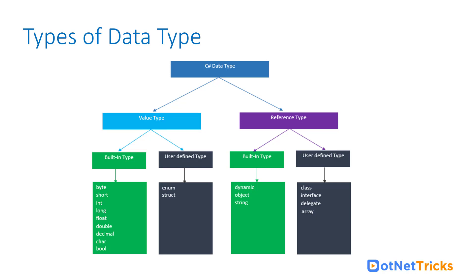Same with the reference type — we can categorize into two types: built-in type and the user-defined type. In built-in type, we have dynamic, object, and string. These are the built-in reference types, and for the user-defined, we have class, interface, delegate, and array. So these are the user-defined types in C#, and these user-defined types will be of reference type.